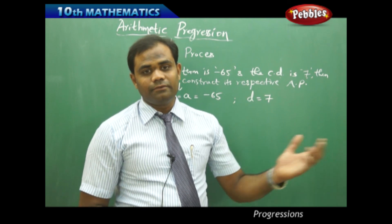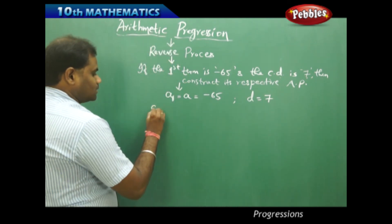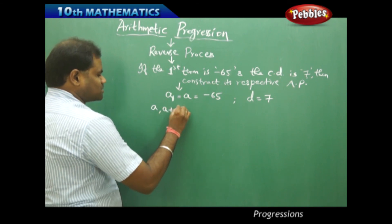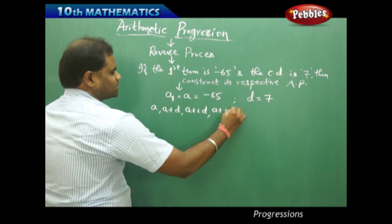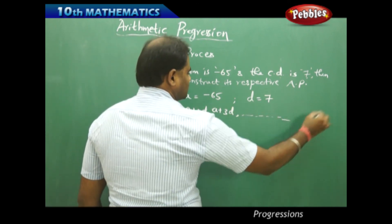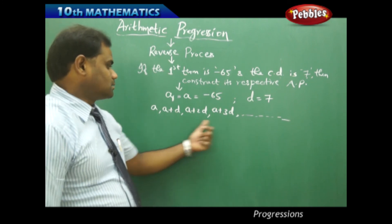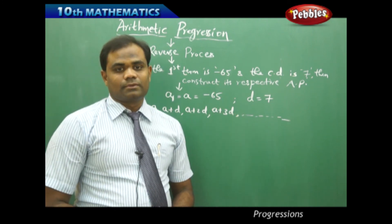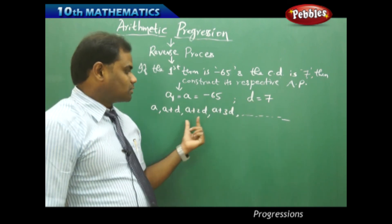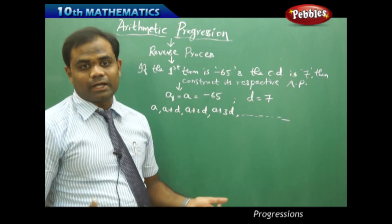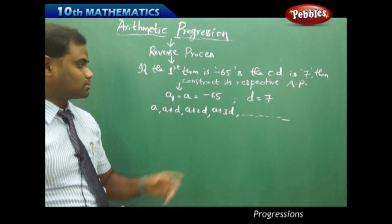We can do that because if we revisit the general arithmetic progression, it is A, A plus D, A plus 2D, A plus 3D, and so on. Since I know A and D, I am going to substitute into each of the terms to get the whole sequence.